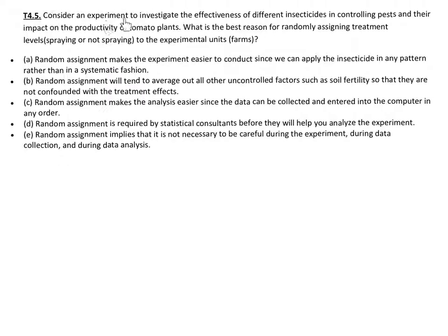Question five. Consider an experiment to investigate the effectiveness of different insecticides in controlling pests and their impact on the productivity of tomato plants. What is the best reason for randomly assigning treatment levels, spraying or not spraying, to the experimental units, which are our farms? Here, letter B is going to be the correct answer. Random assignment will tend to average out all other uncontrolled factors, such as soil fertility, so they are not confounded with the treatment effects.